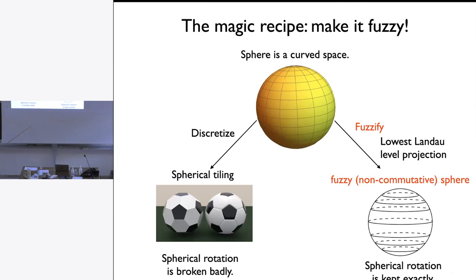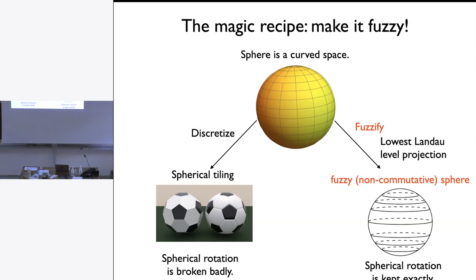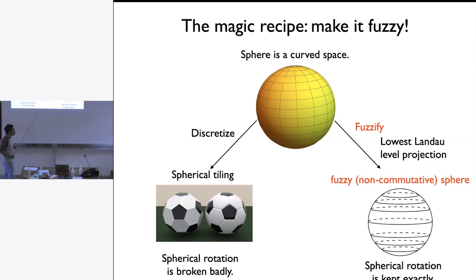What makes this miracle happen is that instead of the conventional wisdom of discretizing a sphere, what we are doing is fuzzifying the sphere. This is actually a serious mathematical term referring to a non-commutative sphere, and in condensed matter language it's something very familiar — physics projected to the lowest Landau level.